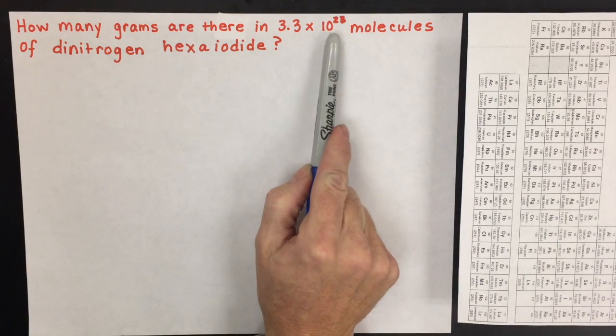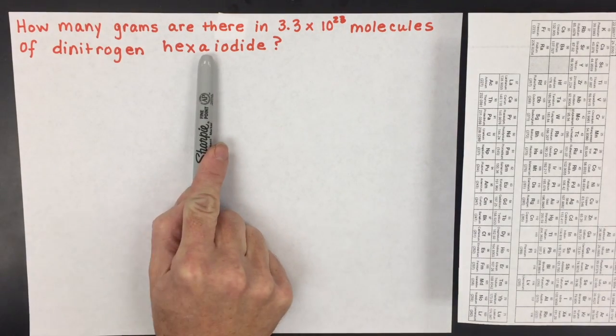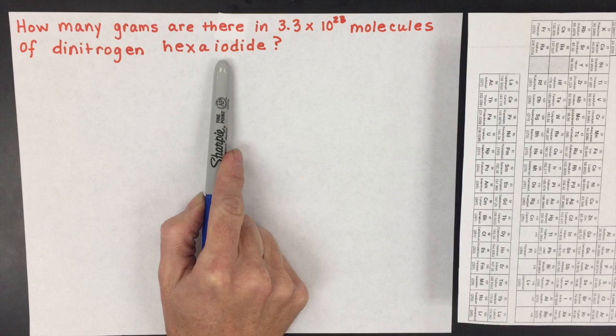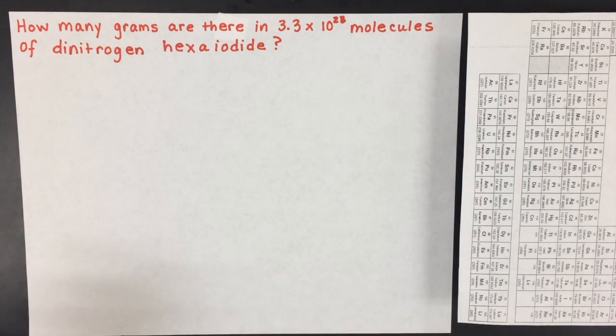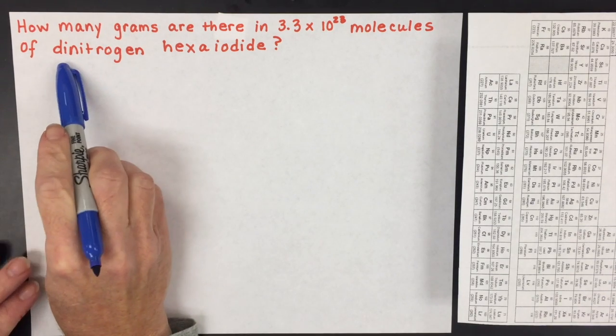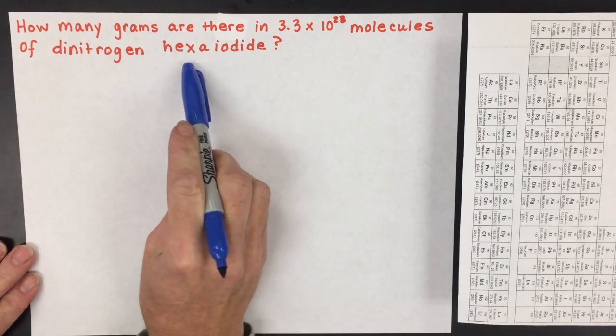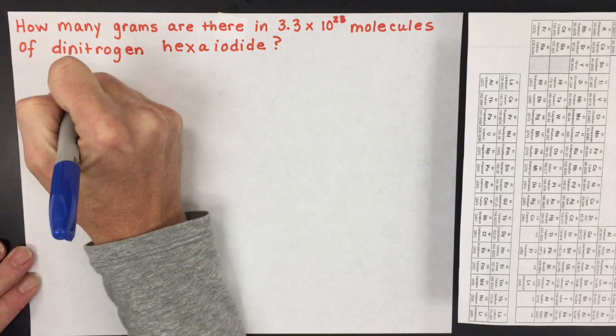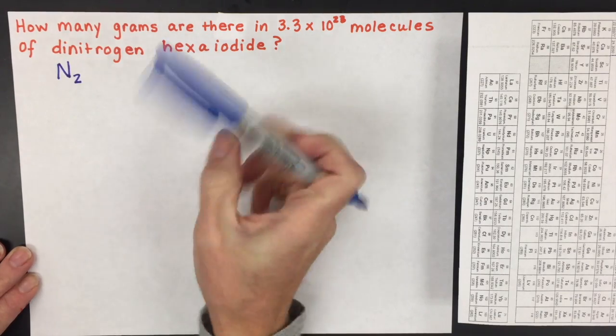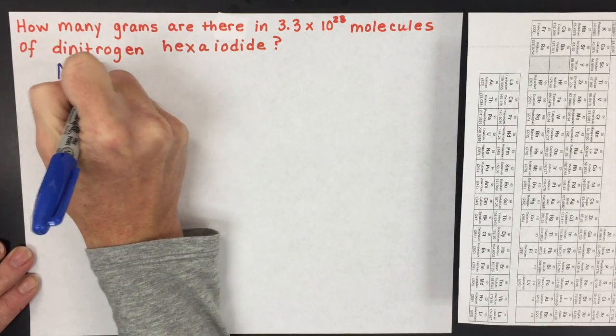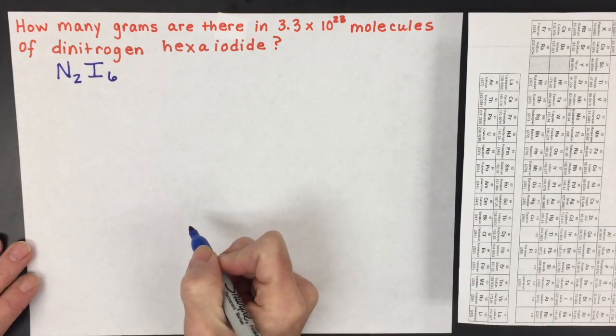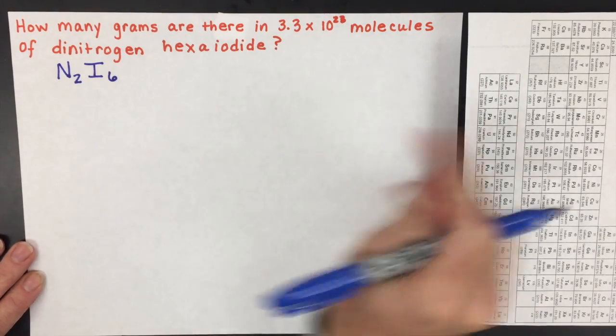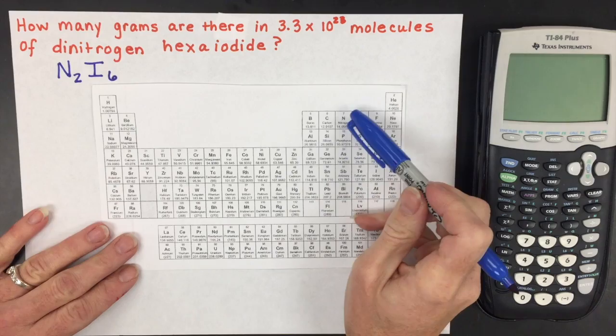We're going to convert the number of molecules of a covalent compound called dinitrogen hexaiodide into grams. The first step is to write the covalent compound dinitrogen hexaiodide correctly. To do that, you have to know that di means 2 and hexa means 6. So it's N2I6 as the formula for this covalent compound.